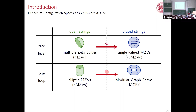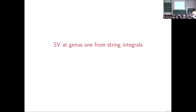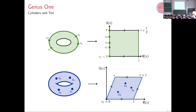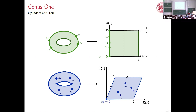We want to study the string integrals on the cylinder and the torus. We can parameterize the cylinder as being a half-torus: we take some tau which we set to be imaginary, and the punctures lie along the imaginary axis. For the torus, we take a parallelogram, identify the opposite sides, and the geometry is entirely fixed by this one complex number tau in the upper half plane. We will not integrate out this tau, so everything we do will still have this tau dependence — that's a crucial point.